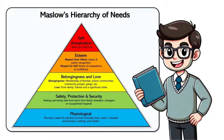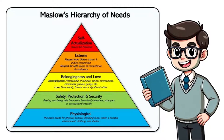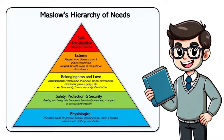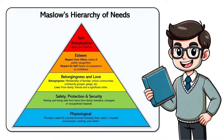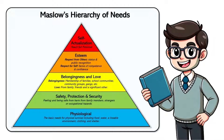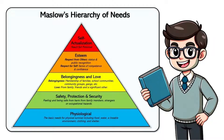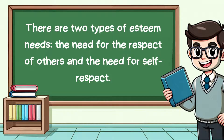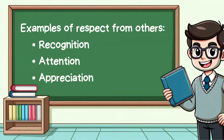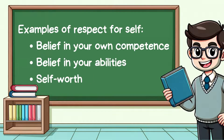The fourth level is esteem needs. This revolves around the need for respect and recognition from others, as well as self-respect and a sense of accomplishment. There are two types of esteem needs – the need for the respect of others and the need for self-respect. Examples of respect from others include recognition, attention and appreciation. Examples of respect for self include belief in your own competence, ability and self-worth.